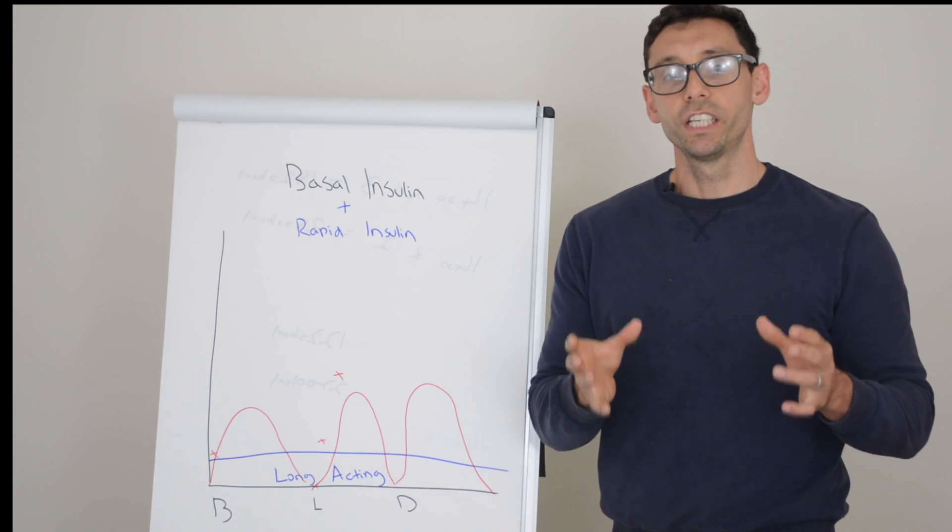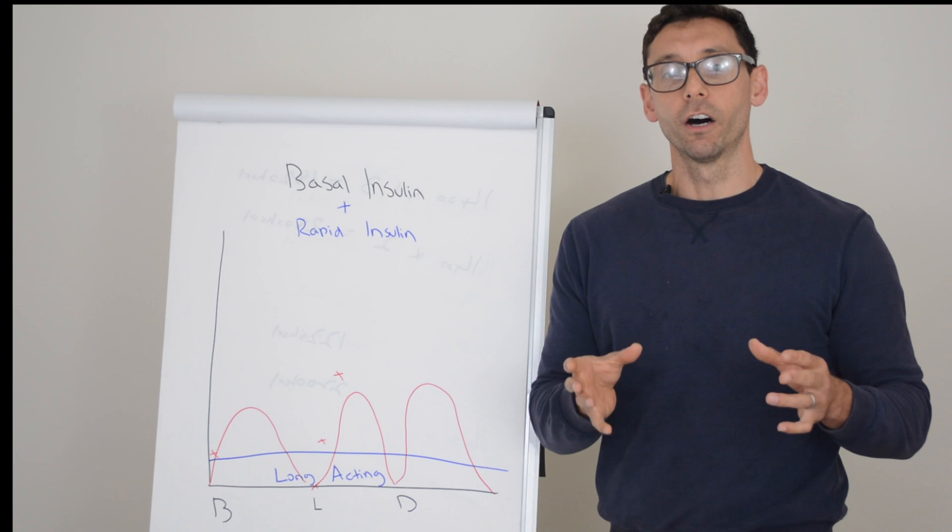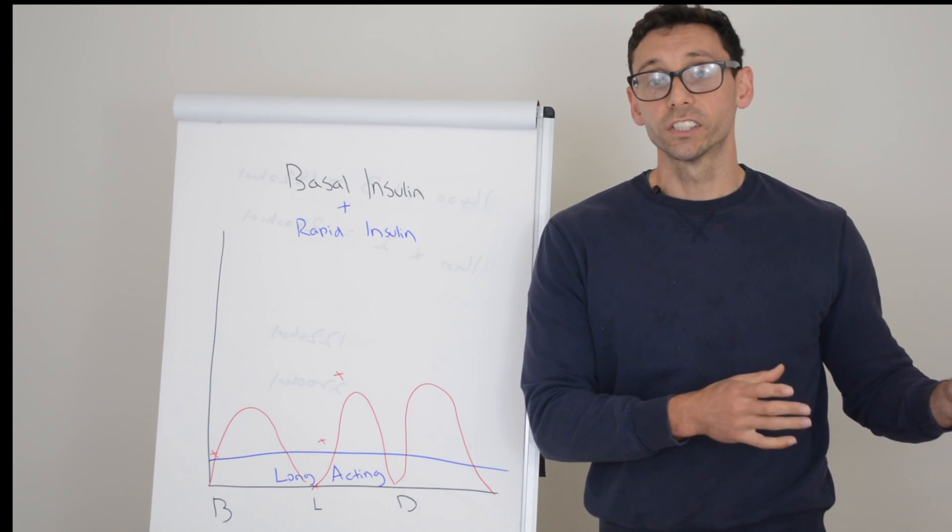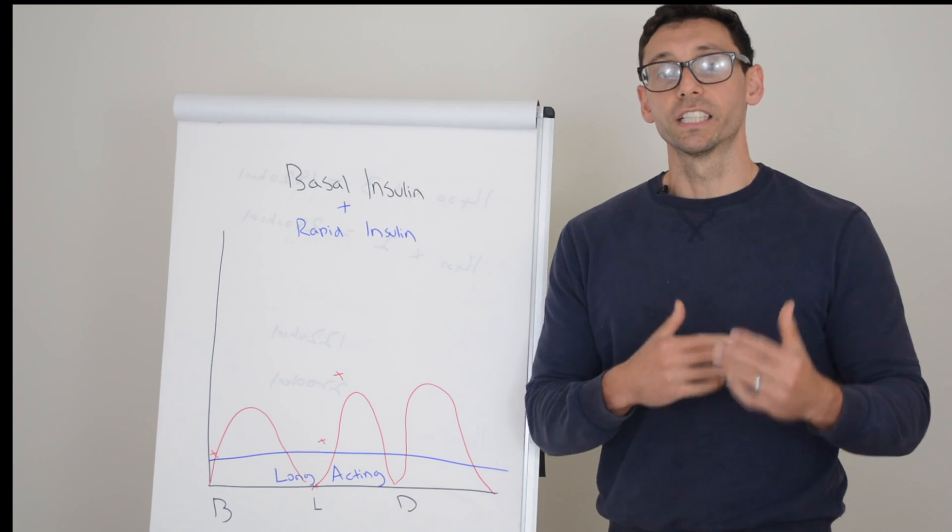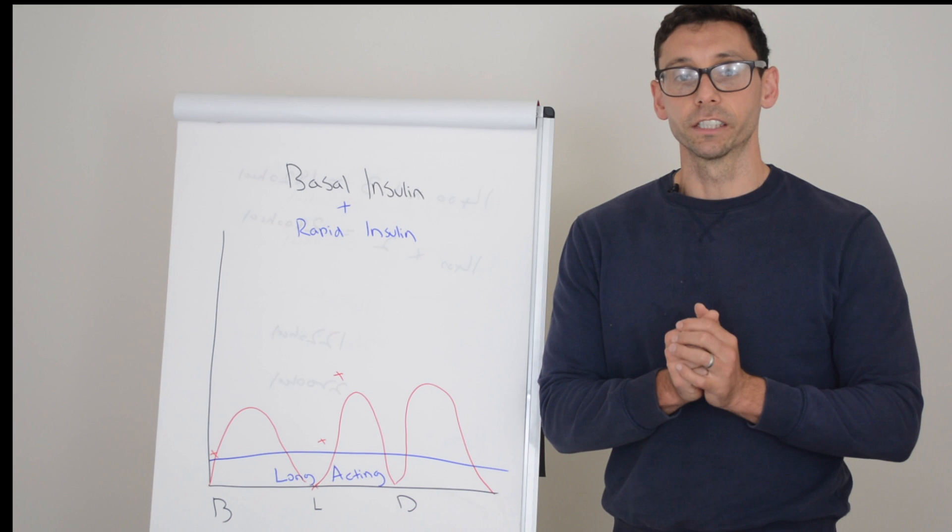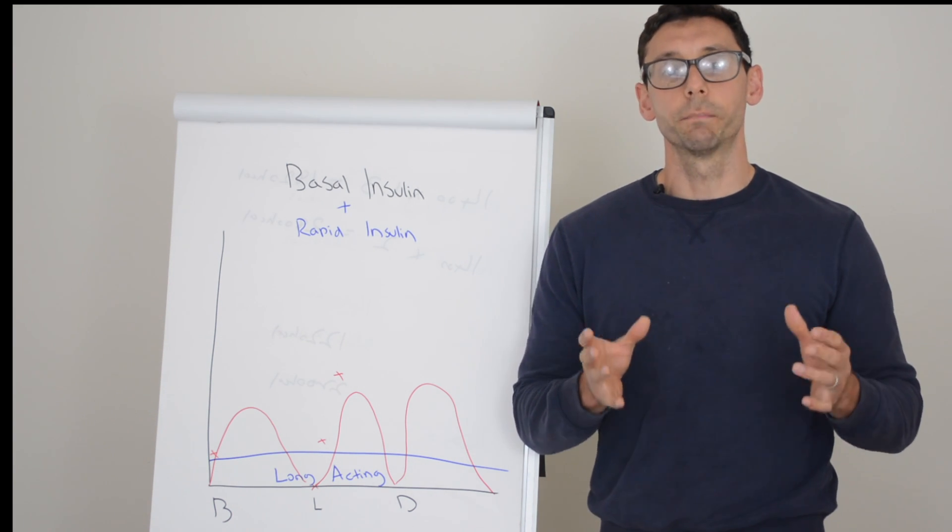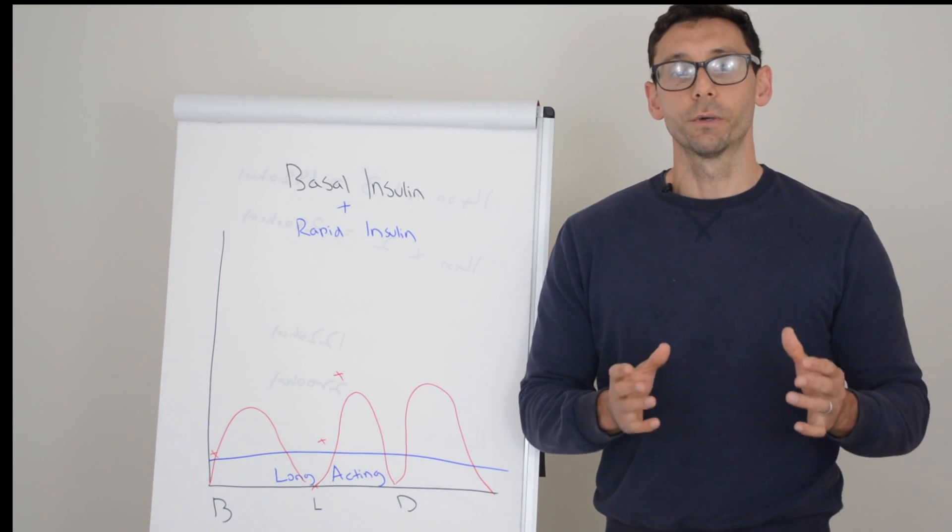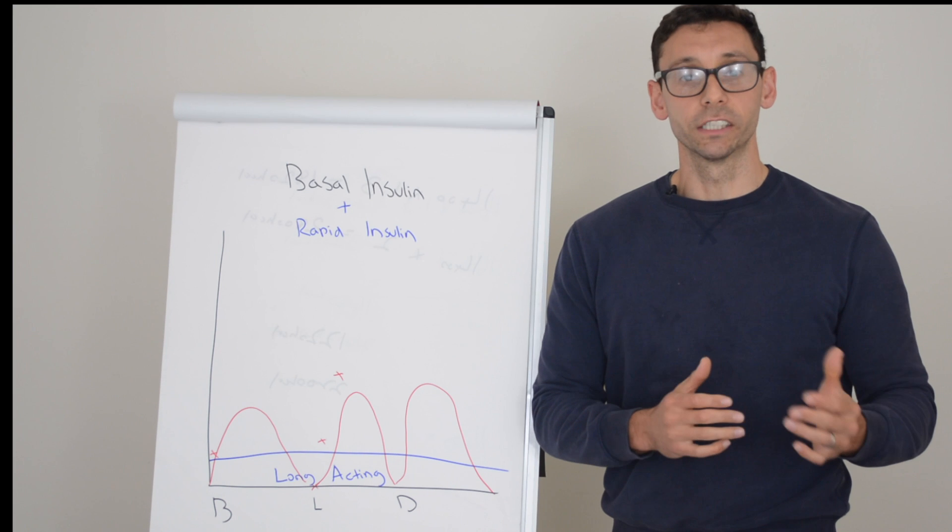Your diabetes team will teach you how to count up your carbohydrates, or check out the type 1 section on our blog to understand how to do carbohydrate counting. This will allow you to adjust your insulin based on what you're eating because you'll have different amounts of carbohydrates based on your meal.